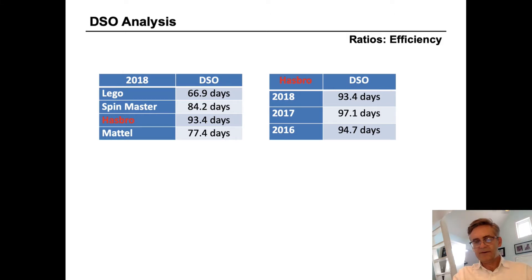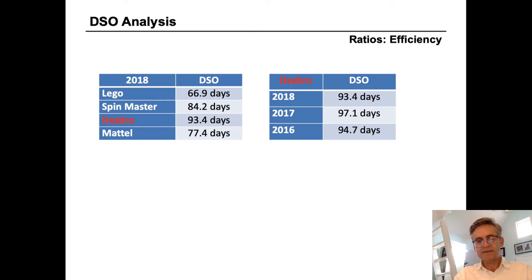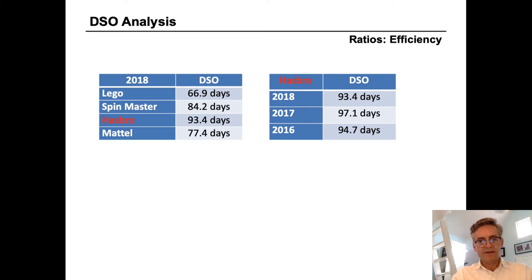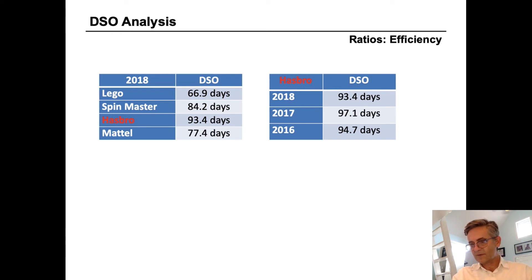So we'd want to know why it's taking them so long to collect. When we use horizontal analysis to compare the DSO for Hasbro to prior years, we can see that Hasbro has traditionally been over 90 days at 94.7 and 97, and now 93.4. So this is actually their best DSO in the last three years, and still significantly longer than the rest of the companies in the industry.